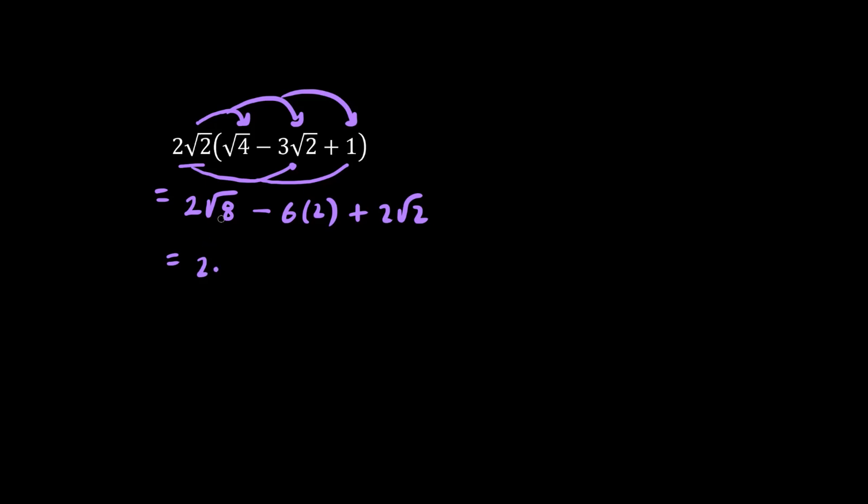We have 2 times 8, which is 2 root 2, as a mixed radical, minus 6 times 2 is 12, plus 2 root 2. 2 times 2 is 4, so we have 4 root 2. We'll work on this part next, plus 2 root 2, minus 12. What's 4 root 2 plus 2 root 2? We have 6 root 2 minus 12 as our final answer.